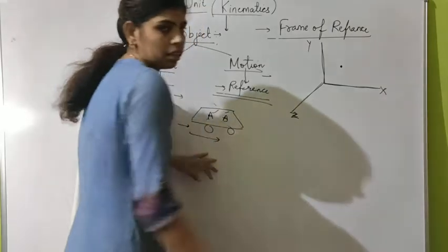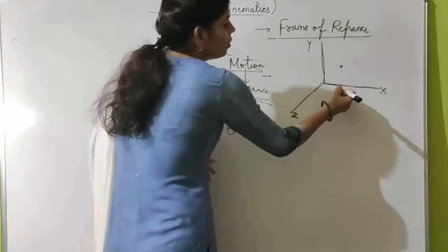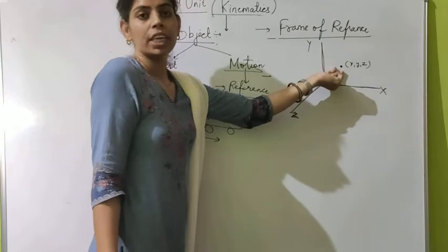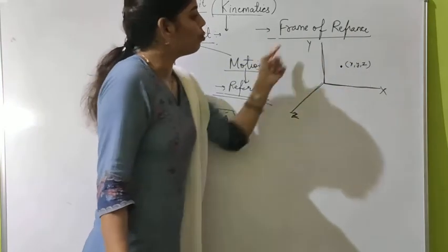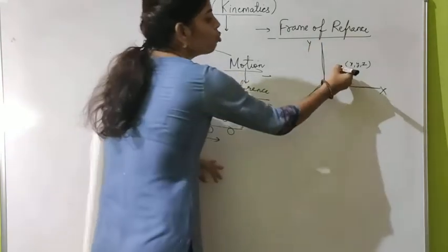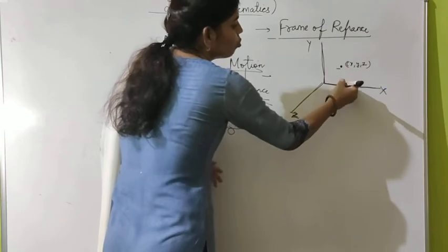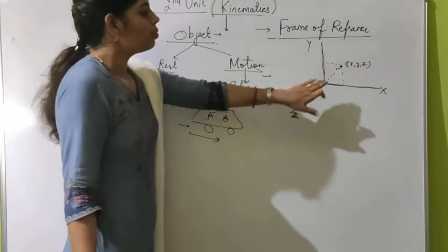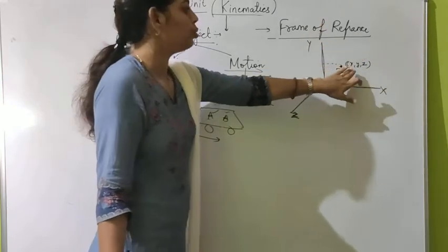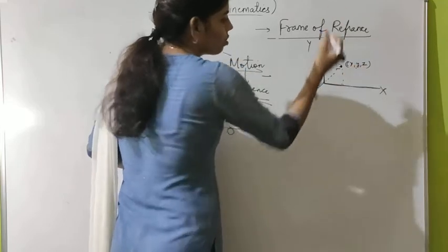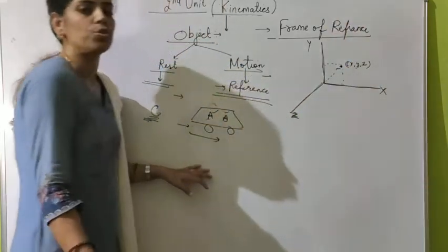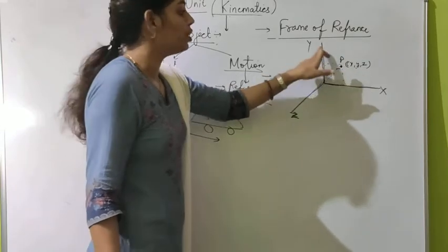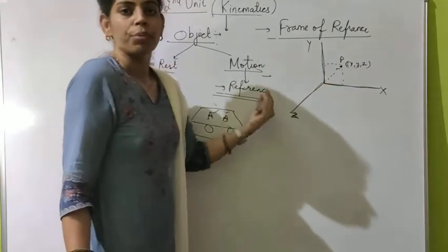Suppose I have taken a particle. This particle has X, Y, and Z coordinates. If we want to specify the position of this particle in the frame of reference, we note its position along the X axis, Y axis, and Z axis. If the particle remains at the same position — its X, Y, Z coordinates don't change — then we say this particle P is at rest with reference to this X, Y, Z frame of reference.